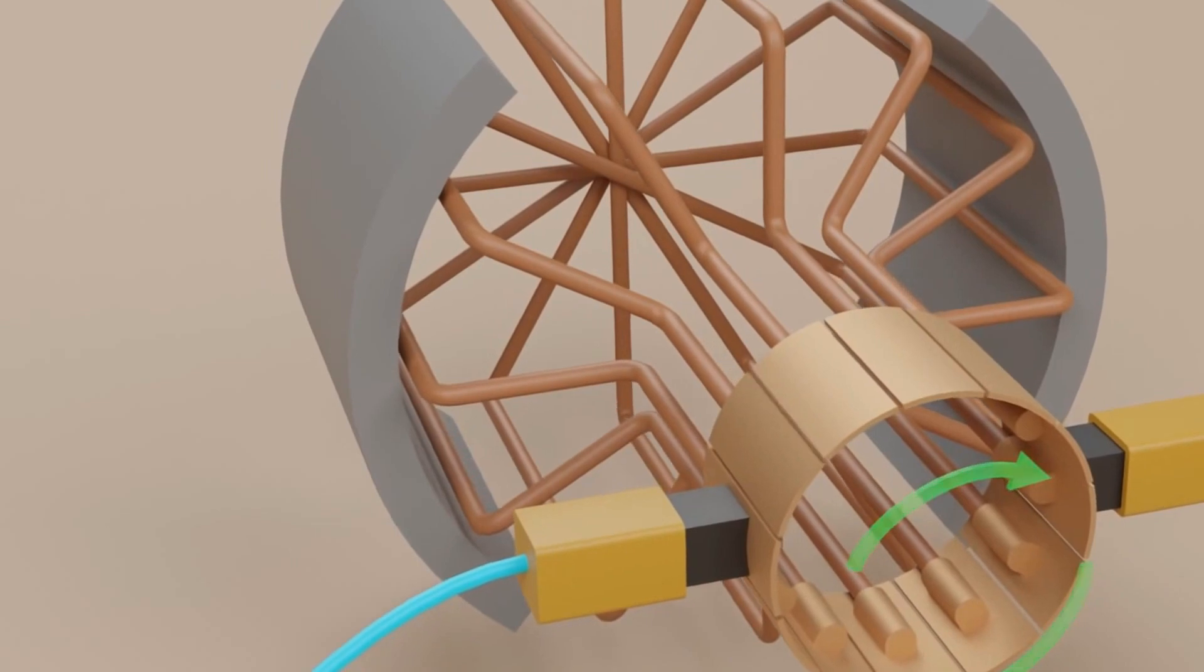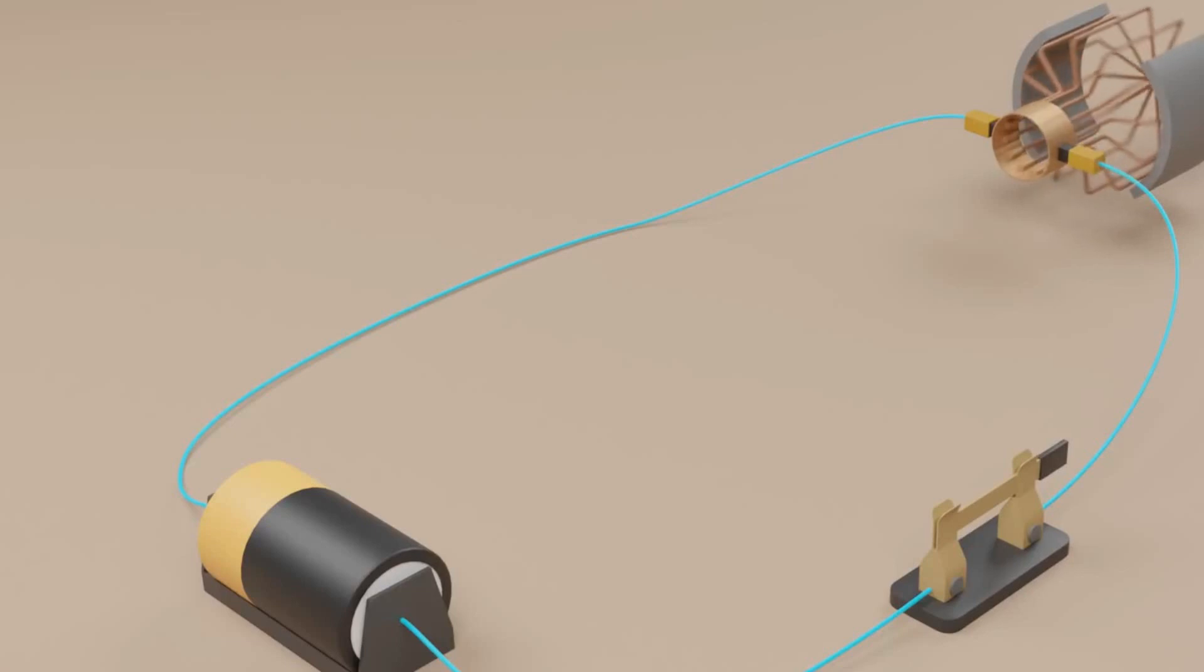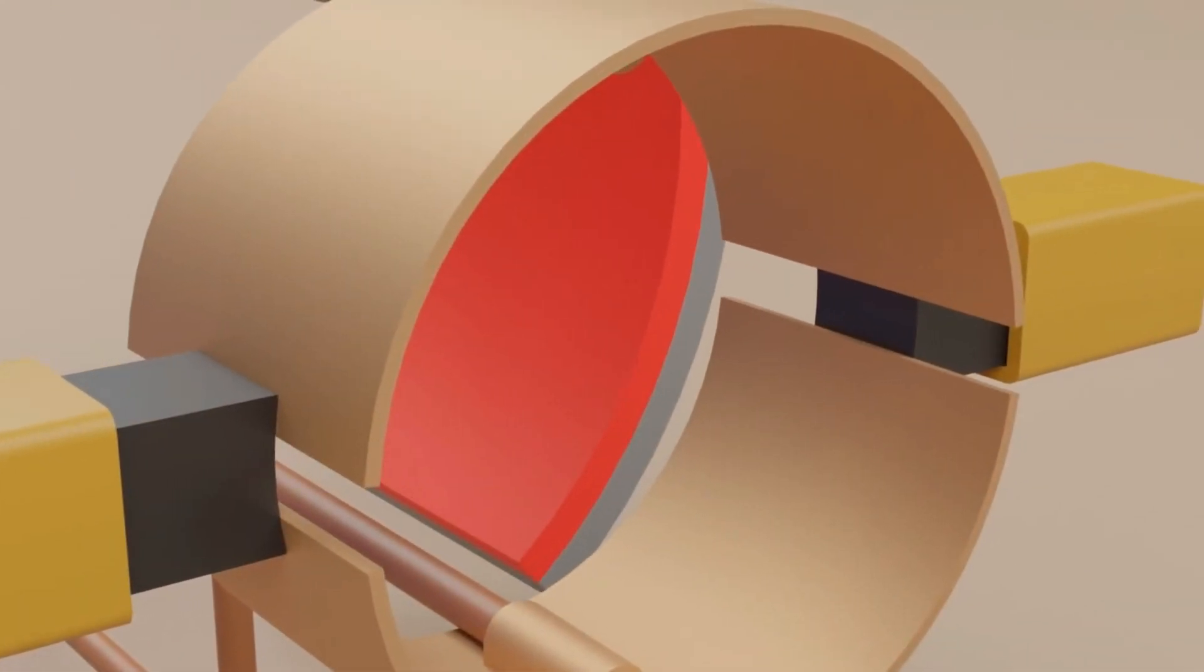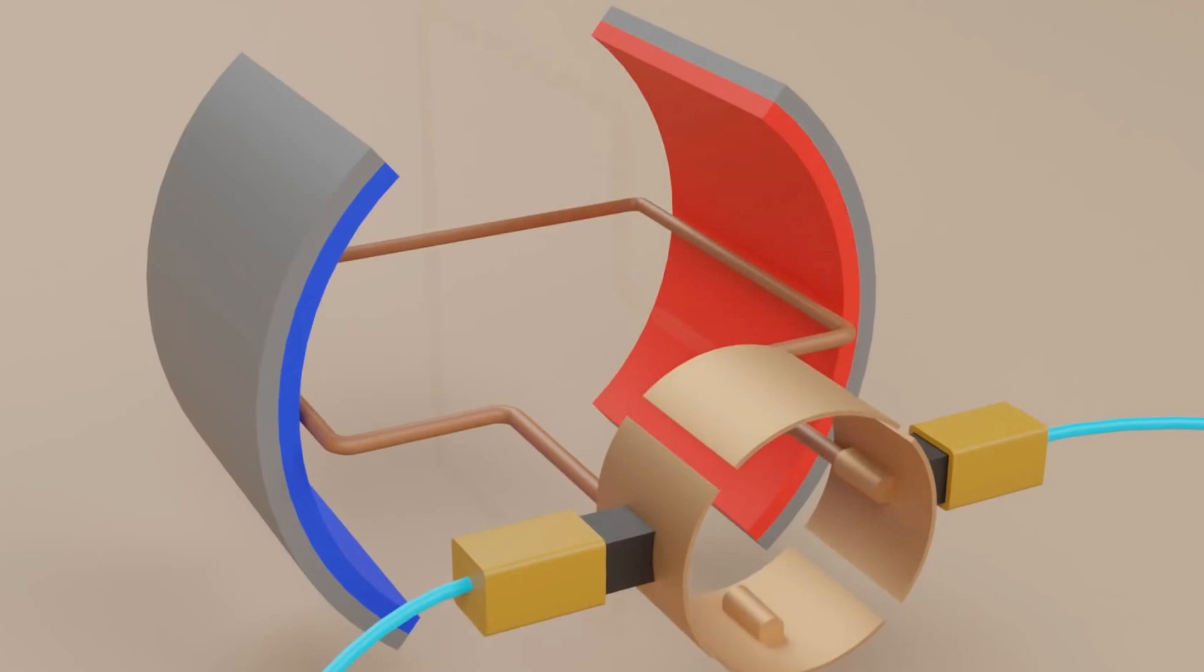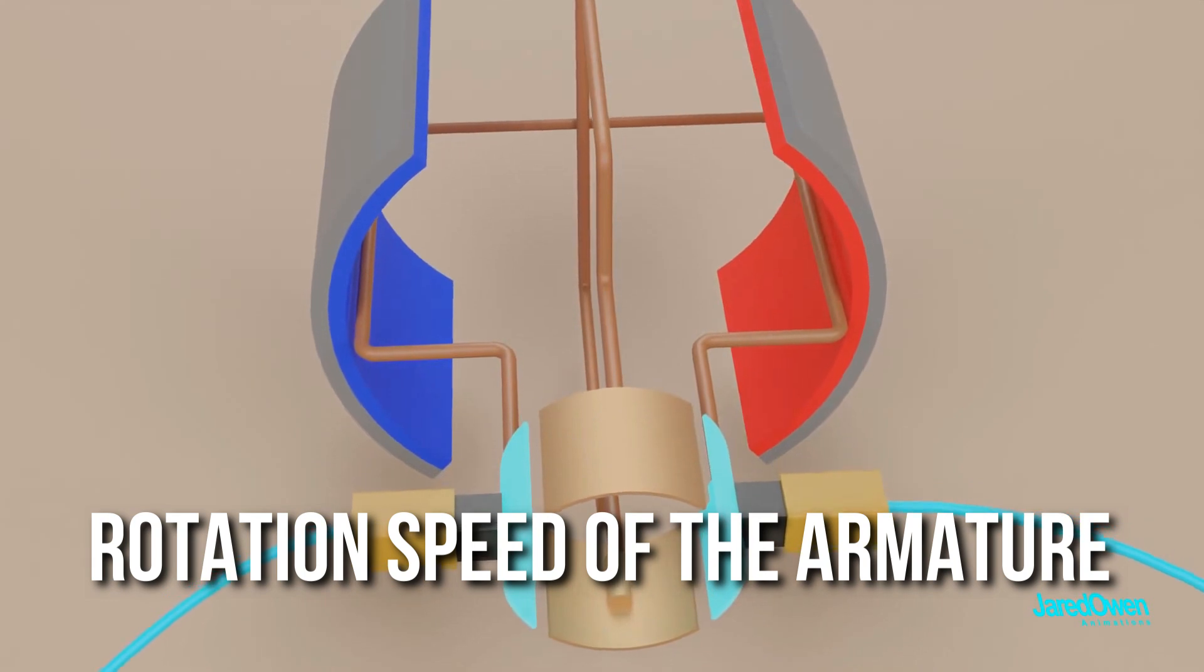A commutator generally consists of a split contact ring on which a brush applies DC current rides. The rotation of the armature winding through the stator field creates a voltage known as a counter-electromotive force across the armature to counteract the applied voltage. This is the result of Faraday's law. Besides, the size of the counter emf depends on the strength of the magnetic field and the rotation speed of the armature.